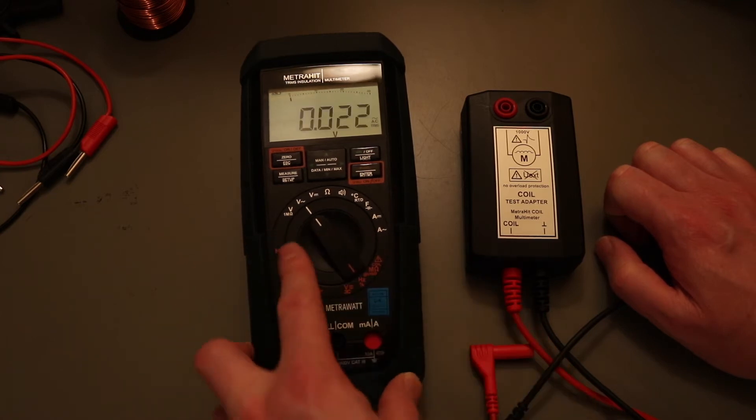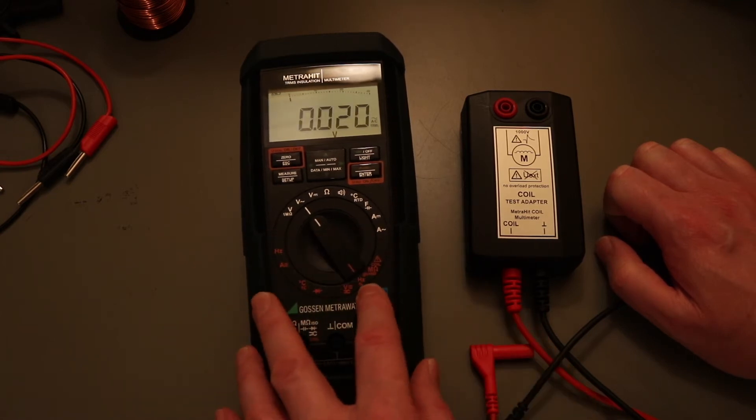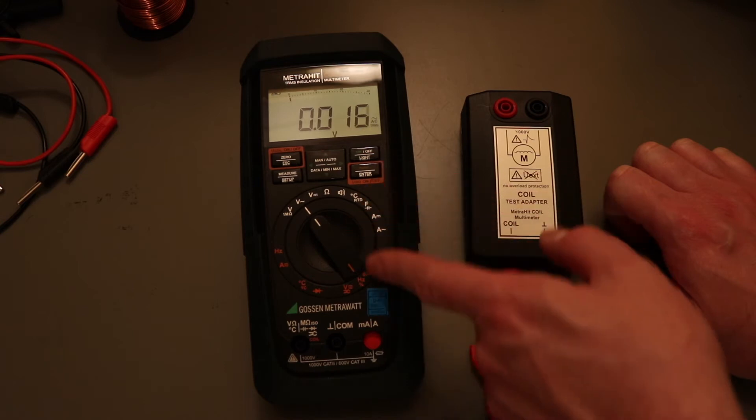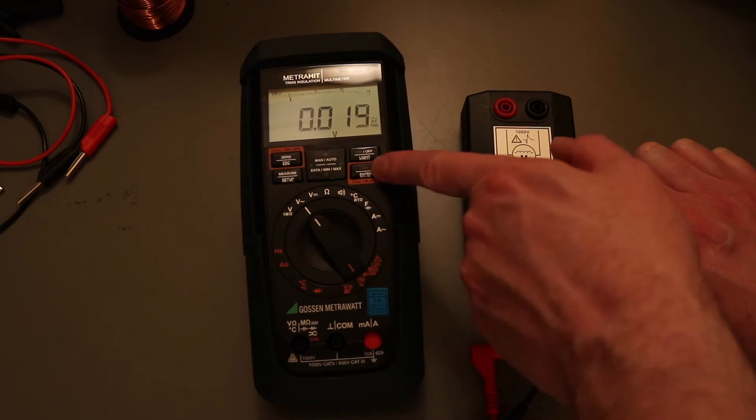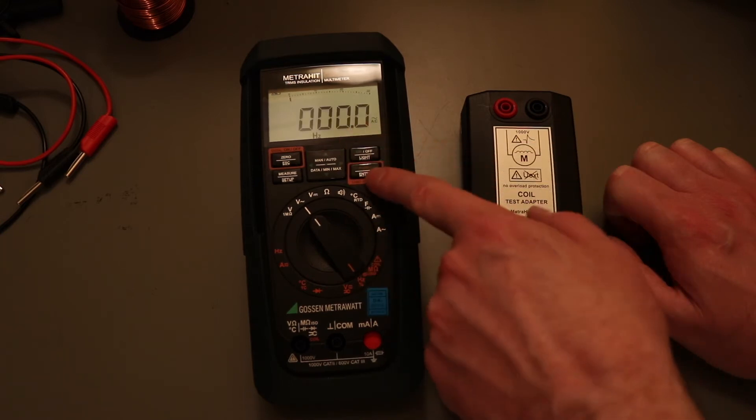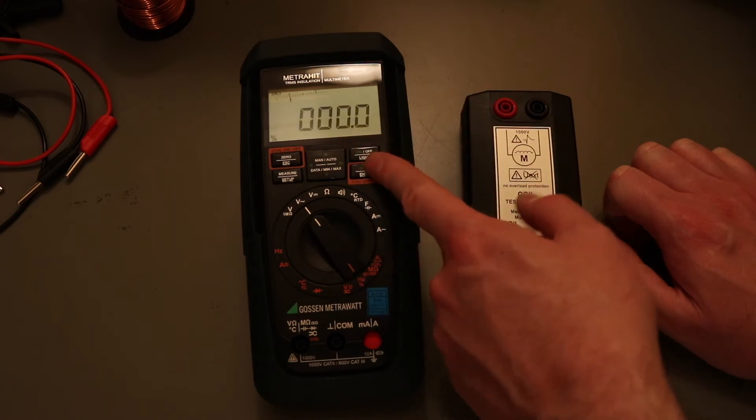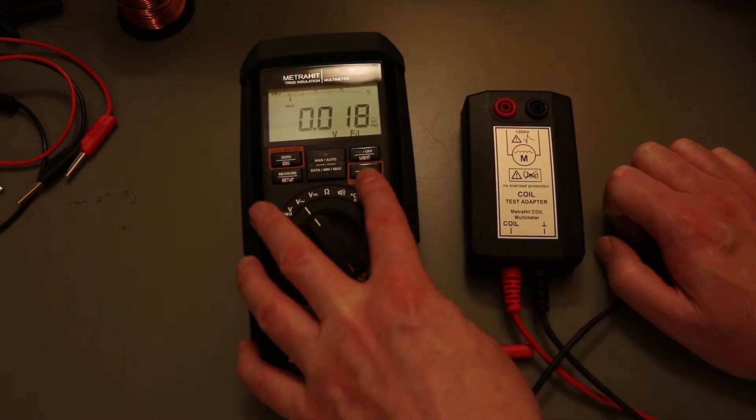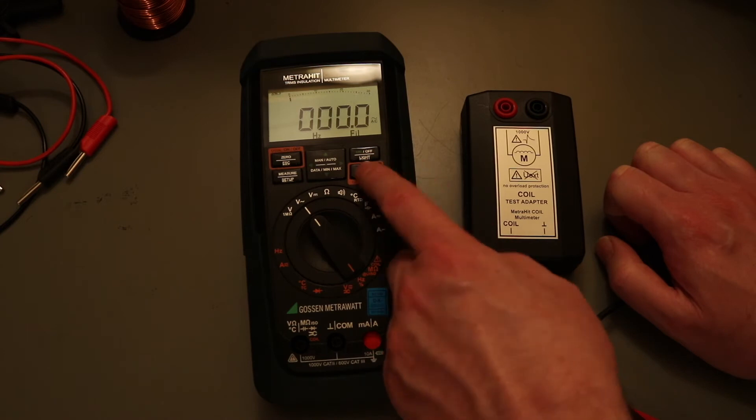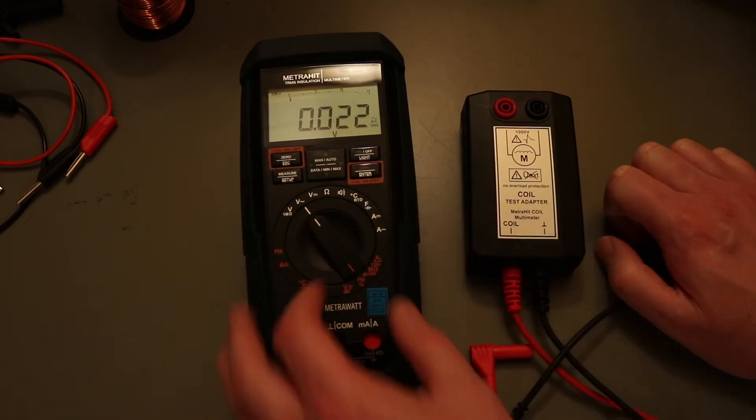And then moving around to volts AC, that's shared with the frequency again. You can change the function by pressing the function key. Change it to Hertz, duty cycle, low pass filter on the voltage as well, and on the frequency if you want to, and back to voltage.